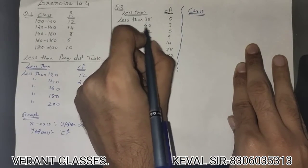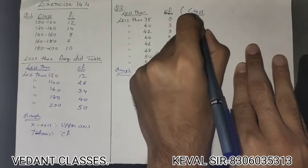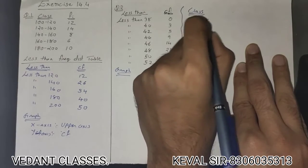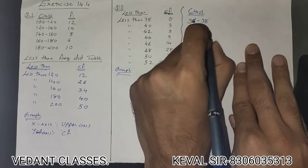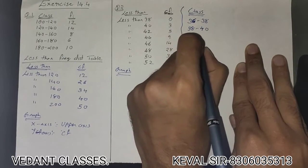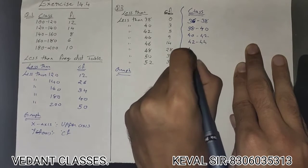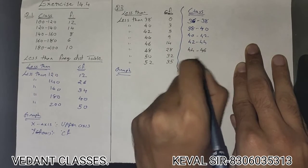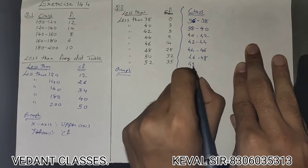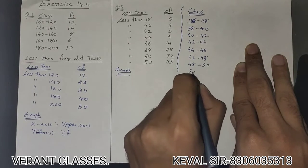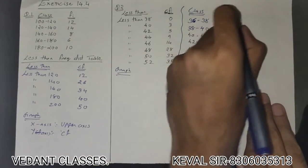The class interval difference is 2, so the classes are: 36–38, 38–40, 40–42, 42–44, 44–46, 46–48, 48–50, and 50–52.